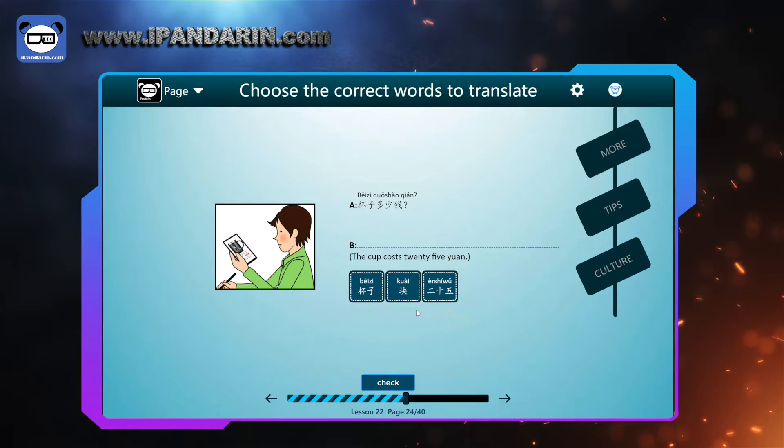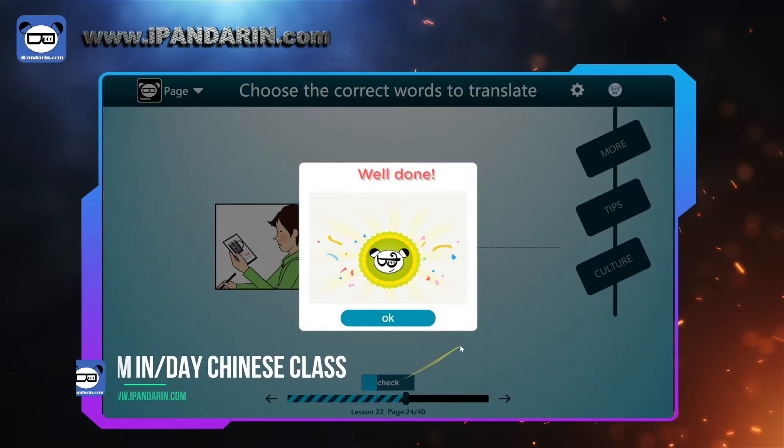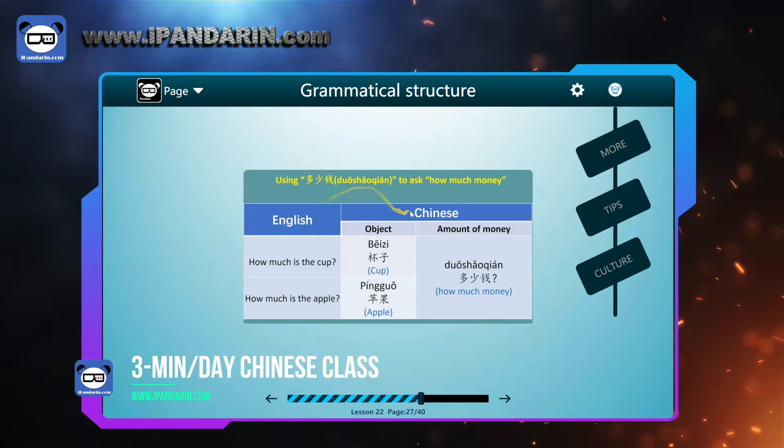A conversation. 杯子多少钱? How much is the cup? The cup costs 25 yuan. 杯子二十五块钱. Using 多少钱 to ask how much money. How much is the cup? 杯子多少钱? How much is the apple? 苹果多少钱? It's very easy to spell the things, the price you want to question about. 咖啡多少钱? 电脑多少钱? We can make many, many sentences.